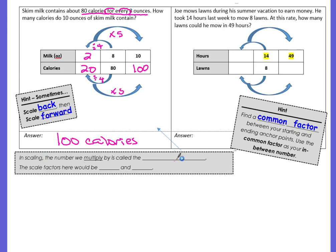Let's come down here. In scaling, the number we multiply by is called the scale factor. The scale factors here would be, what did we do first? We divided by 4 and then we multiplied by 5.